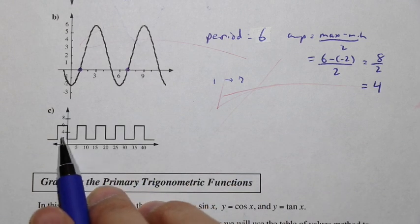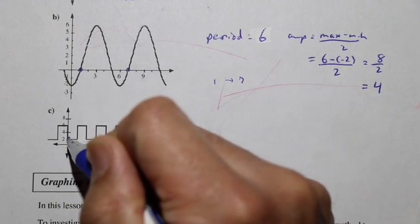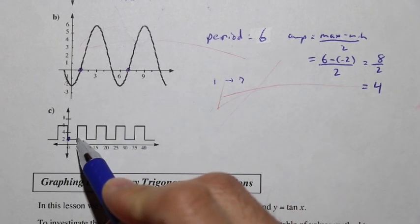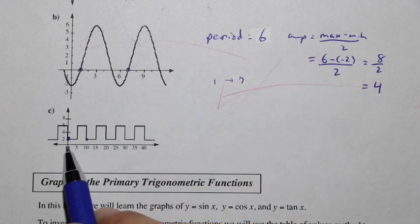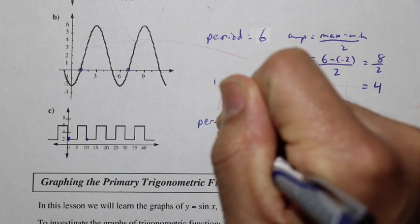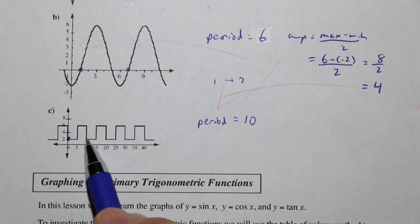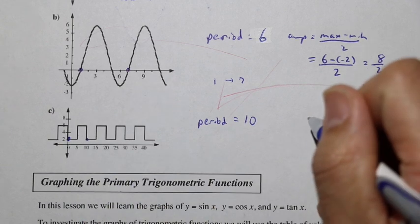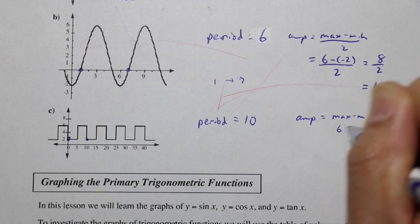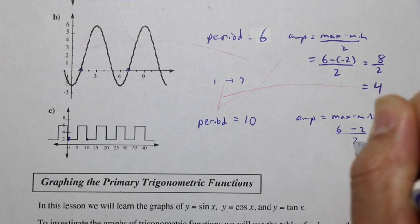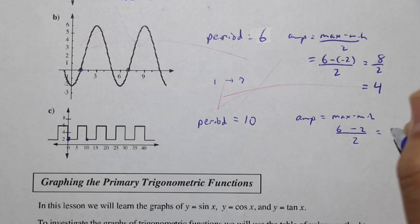If we take a look at part C, let's take a look at the period of part C. We have this starts right there, and then it goes over, up, over, and down. And so there it starts again. And you can see from 0 to 10, we have the period. The period is equal to 10 here, and the amplitude, we can see the maximum is 6 minus 2. So amplitude equals max minus min, we have 6 minus 2, divided by 2. That's equal to 4 divided by 2, and that is 2. So the amplitude is 2.